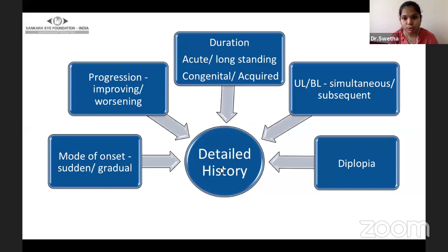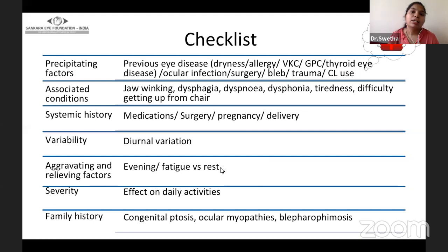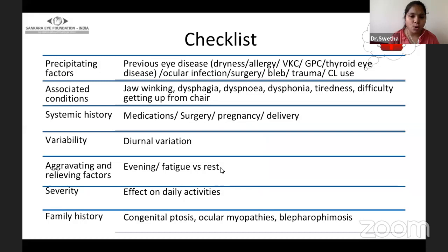If bilateral, document whether it is simultaneous or subsequent, and whether there is any complaint of diplopia. This is the comprehensive checklist to be documented. Precipitating factors include previous eye disease such as dryness, allergy, VKC, GPC, thyroid disease, any ocular infection, surgery, trauma, or contact lens use. Associated symptoms include jaw winking, dysphagia, dyspnea, dysphonia, any fatigue, or difficulty in getting up from a chair.